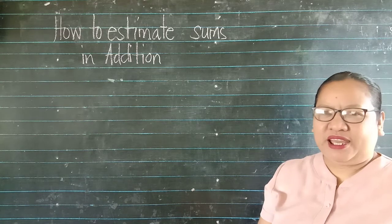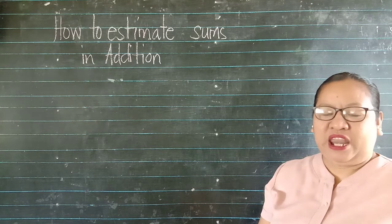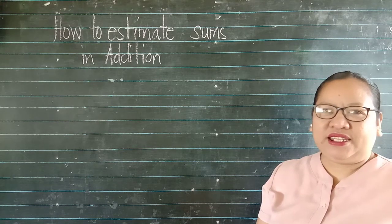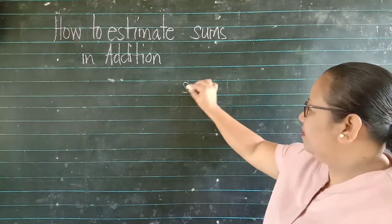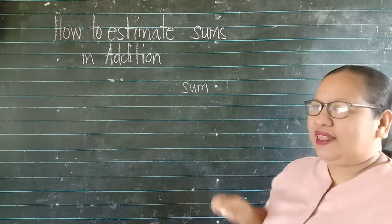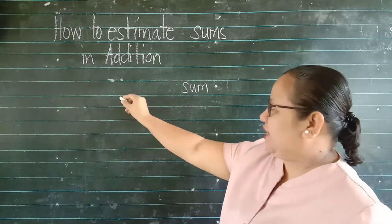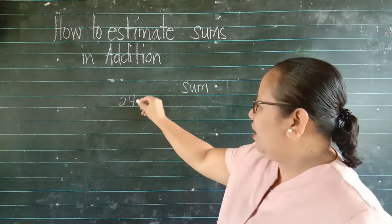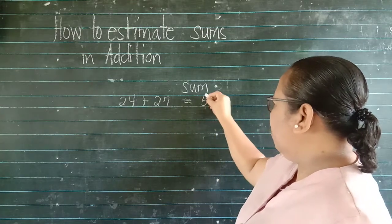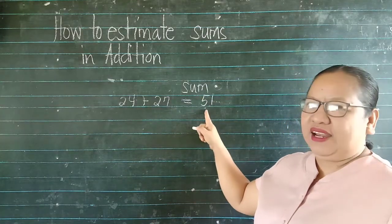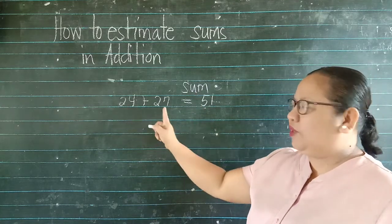But before that, let us unlock first some words that we will be using in our discussion. Let's say for instance the word sum. When we say sum, that is the answer in addition. Let's say for instance, 24 plus 27 equals 51. 51 here is the sum or the answer of these two numbers.